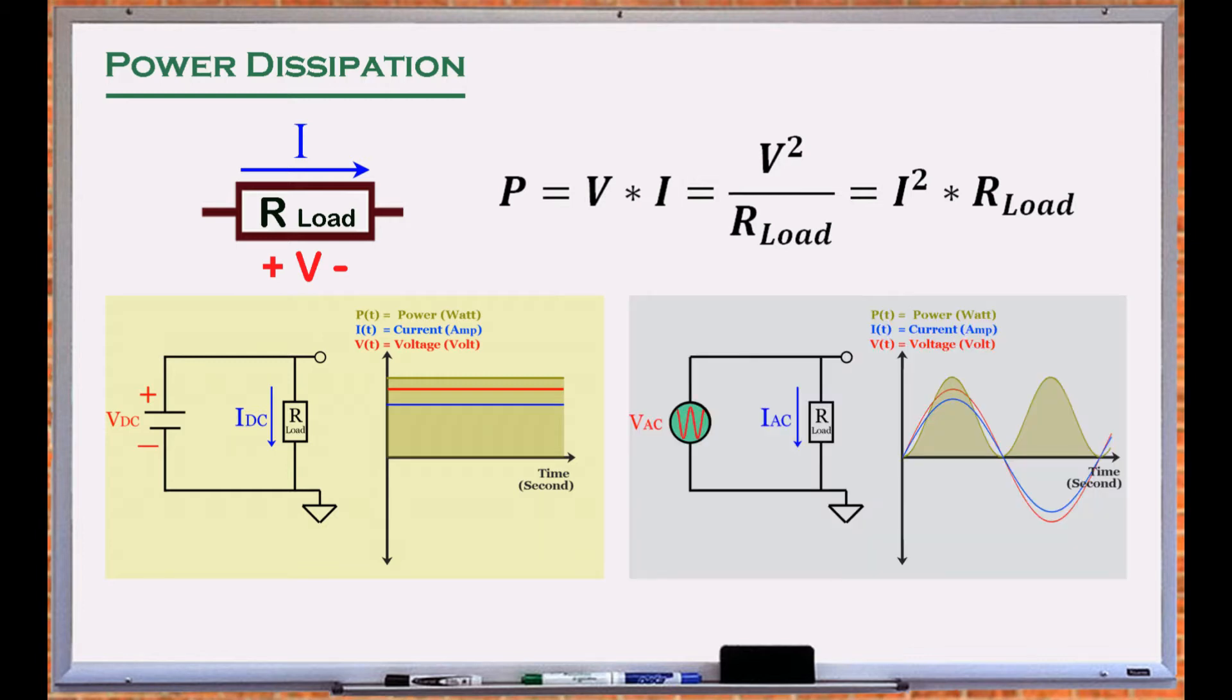For an AC circuit however, the power dissipation continuously changes with time. For these circuits, a more appropriate way to quantify the power is its average value.